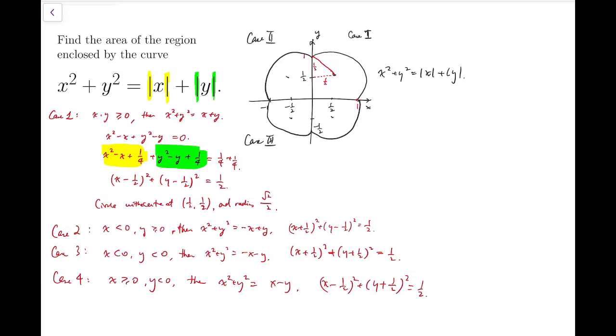Now to find the area of this region enclosed by this curve, we can actually split the diagram into a few parts. We can extract out the semicircles, which are all of the same radius. And the thing in the middle is actually a square, because all the sides of this quadrilateral are diameters, which means they are of length root 2.